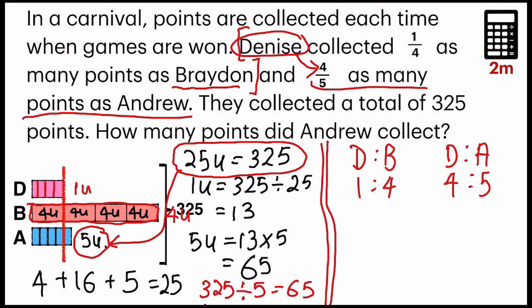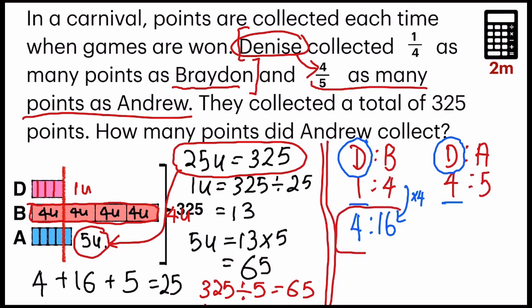Take a look at these two ratios. Who is the common person? It's Denise. Brayden has one unit and Denise has four units in the second ratio. They need to be equivalent, so I have to change this first ratio into units of four for Denise by multiplying by four. So four times four equals 16. If you observe the ratio and link it to the model — four units for Denise, 16 for Brayden, and five for Andrew — the numbers match the model exactly.